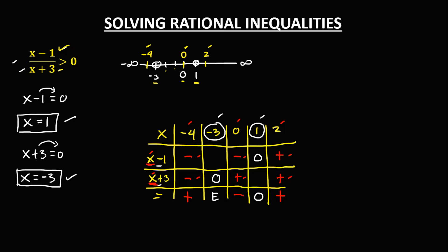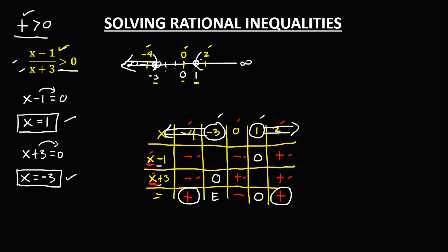Since in the given the condition is greater than 0, and take note that all positive numbers are greater than 0, so therefore in the result just look for the positive result. We have this positive on the left of negative 3, so on the left of negative 3 this one is positive, and also we have this positive on the right of positive 1, so on the right of positive 1 this one is also positive.